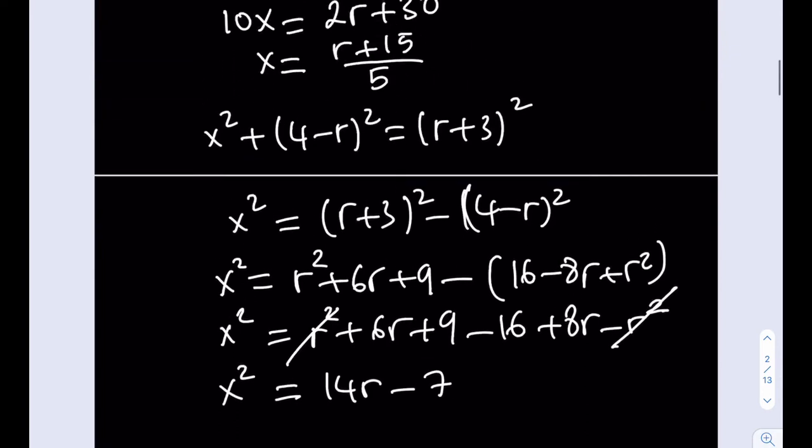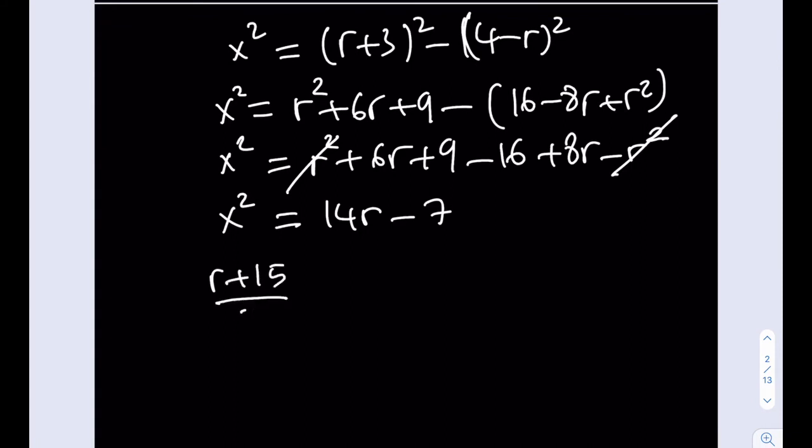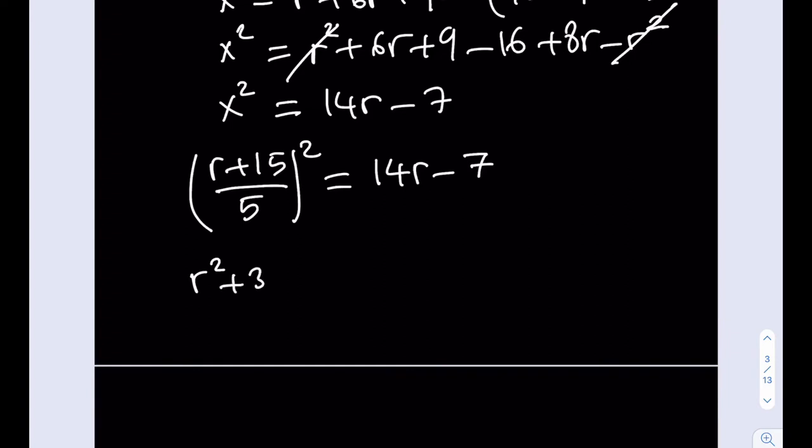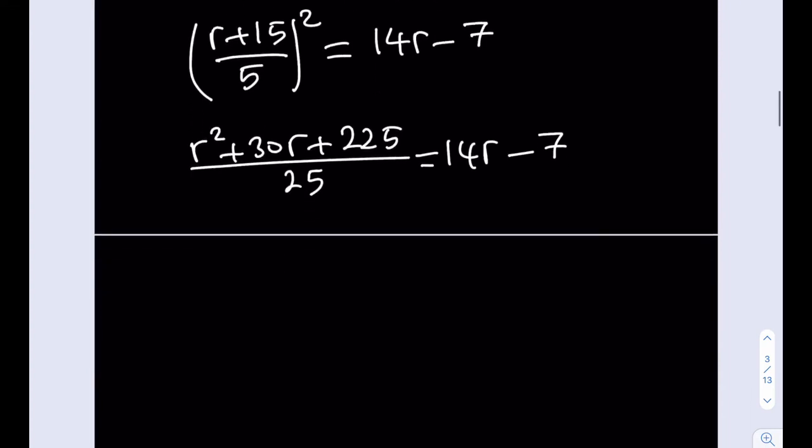Now, we know that x is equal to r plus 15 over 5 in terms of r. So at this point, I can just go ahead and replace x with r plus 15 over 5. I'm going to square that and set it equal to 14r minus 7. And then once we solve this equation, we should be able to find r. I'm going to square the top: r squared plus 30r plus 225 divided by 25 is equal to 14r minus 7. Let's go ahead and cross multiply: r squared plus 30r plus 225 is equal to 25 times 14 is the same as 50 times 7, which is 350r minus 25 times 7 is 175.